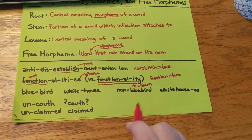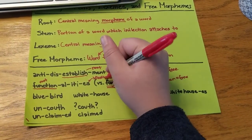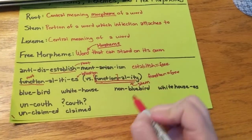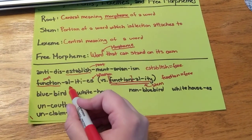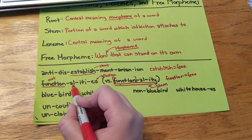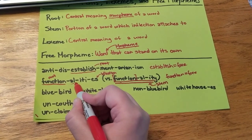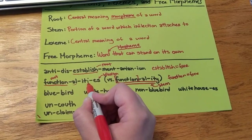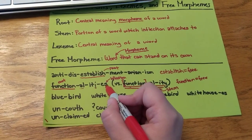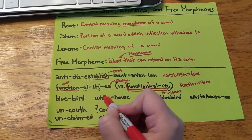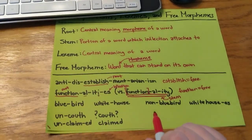That stem is more than just the root. We have a root here, but we add our inflection to functionality. The suffixes -al, -ity are all derivation: function plus -al makes function an adjective, then -ity makes it a noun again — a de-adjectival noun. And then -s is just making it plural. So functionality is a stem that is more than just a root.